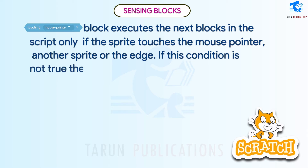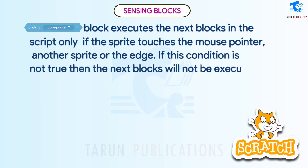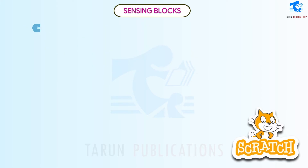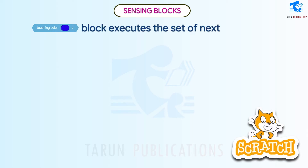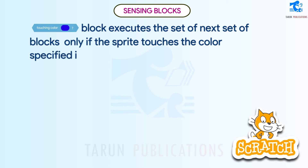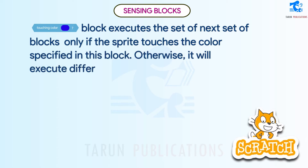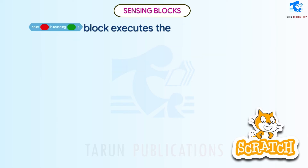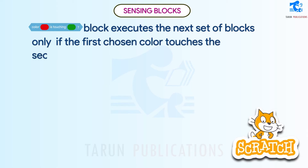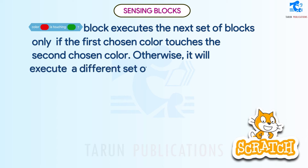If the touching condition is not true, the next blocks will not be executed. Another block executes the next set of blocks only if the sprite touches the color specified in the block; otherwise it will execute a different set of blocks. Similarly, a block executes the next set of blocks only if the first chosen color touches the second chosen color; otherwise it will execute a different set of blocks.